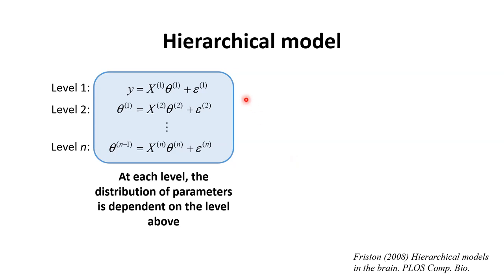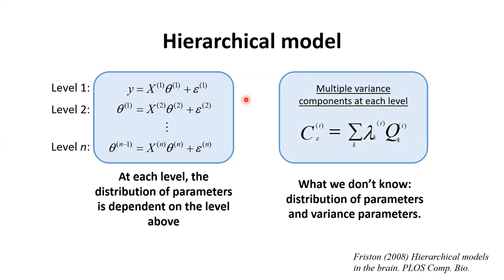With a hierarchical model you take into account both between-subject and within-subject variances, which guarantees the best results. In the summary statistic approach we only took into account the between-subject variances. The first level in our hierarchical model is the GLM we've already talked about. The first level parameters are dependent on the design matrix at the second level, and those are dependent on the level above, and so on. Each level has multiple variance components, and given the data we estimate the effect sizes and variance components at each level, allowing inferences about effects at any level in the hierarchy. This hierarchical modeling approach is used for a variety of things in SPM and brain imaging, not only for group-level effects in fMRI.